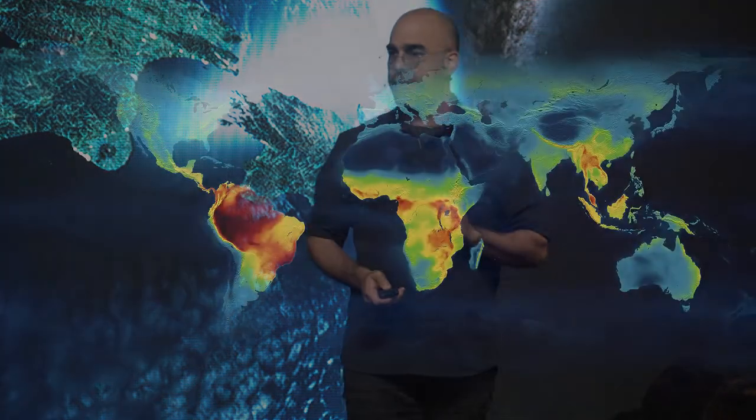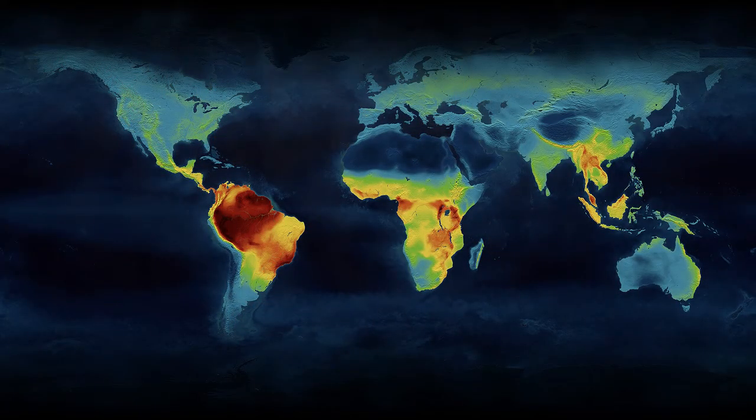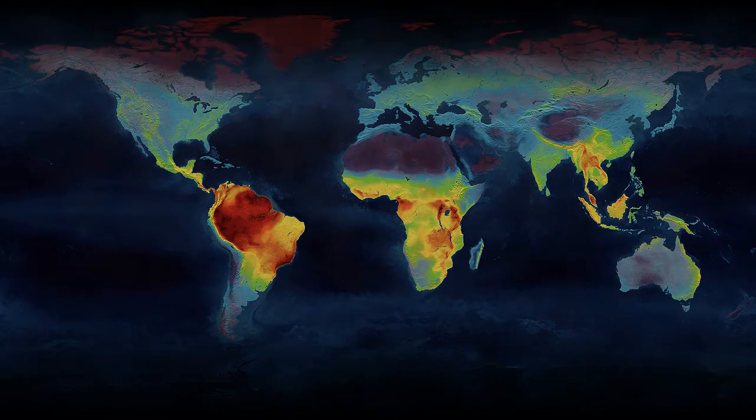This is biodiversity richness. All the species of birds, amphibians, mammals. You can see that the hotspots of biodiversity are in the tropics.